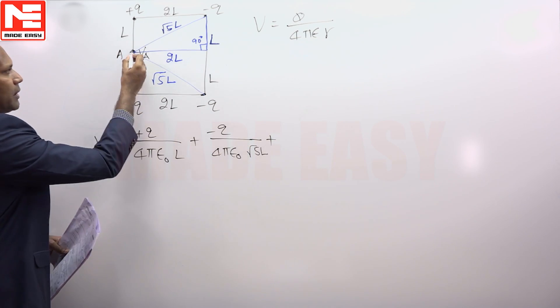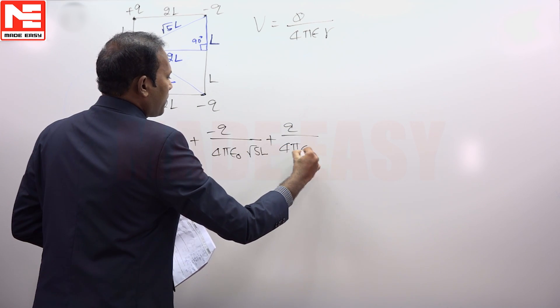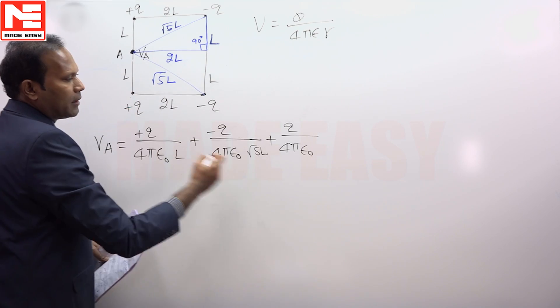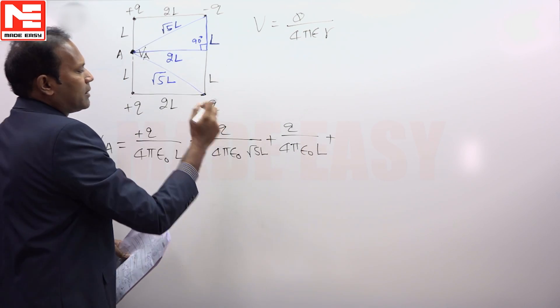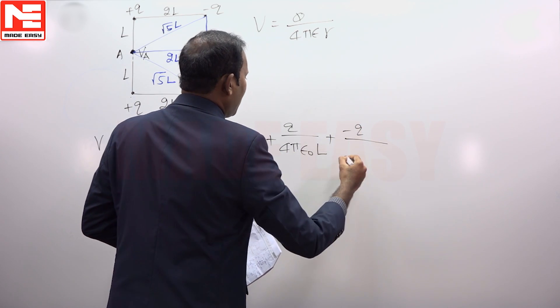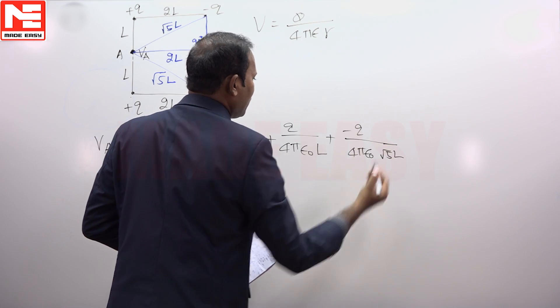Plus potential at this location due to this charge is Q/4πε₀L. Potential at this location due to this charge is -Q/4πε₀ root 5 times L.